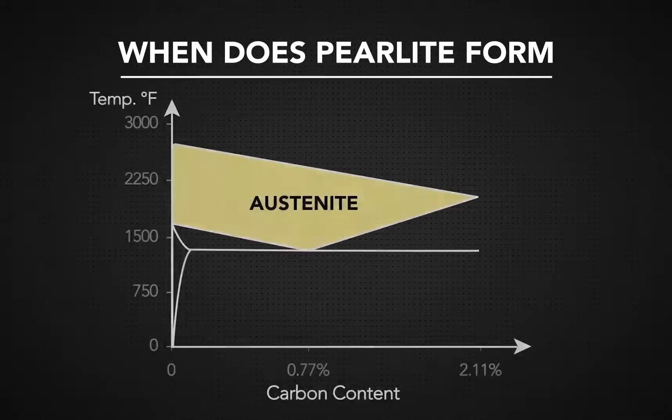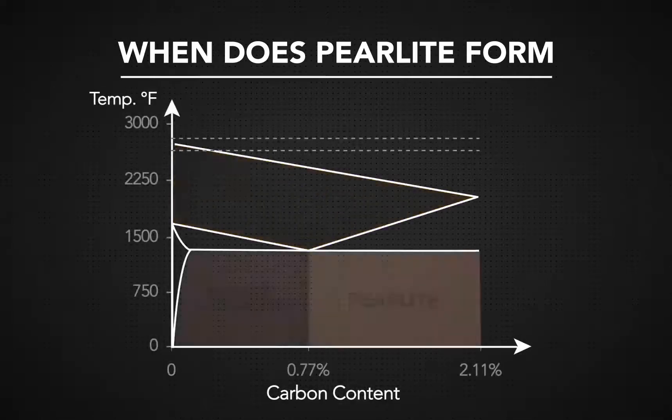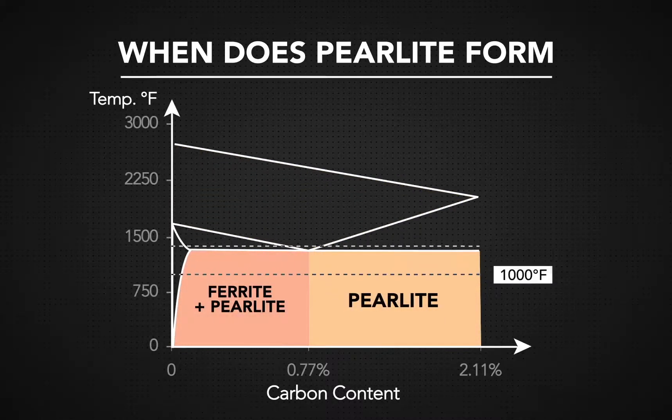Austenite will become perlite in between 1000 and 1341 degrees Fahrenheit.